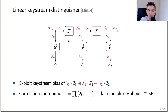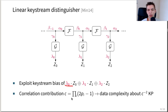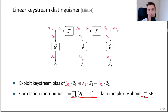To find a linear keystream distinguisher, we use the following notation. We exploit the bias of a selection of keystream bits, specified using linear masks called lambda. To calculate the data complexity, we use the correlation contribution, which is the product of the individual correlations. This leads to a data complexity of about the inverse squared correlation contribution. We also need internal masks that specify the path the linear characteristic takes through the cipher.